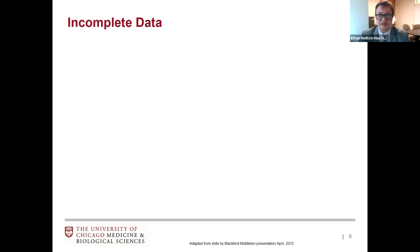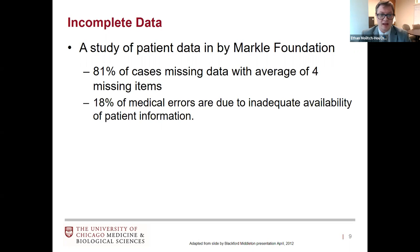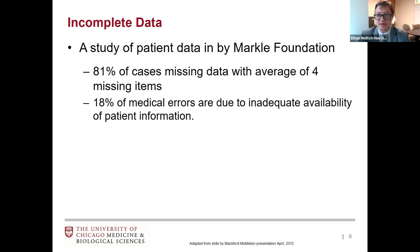We have incomplete data for the patients in front of us. An old study by the MARCO Foundation found that in a clinic, 81% of cases were missing data — whether a medication a patient was on, a past surgery — missing up to an average of four items of critical data. And 18% of medical errors are due to inadequate availability of patient information. In Chicago we're lucky that major institutions like U of C, Loyola, and Northwestern use similar health records that can communicate.